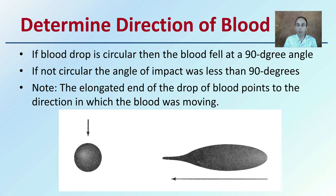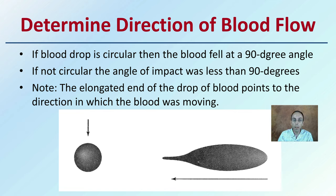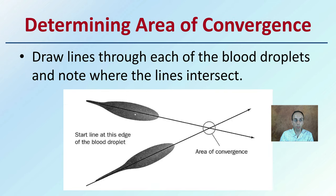To determine the direction of the blood: if a blood drop is circular, then the blood fell at a 90-degree angle. If it's not circular, the angle of impact was less than 90 degrees. Note that the elongated end of the drop points towards the direction in which the blood was moving. It's important to recognize these basic patterns to know the direction the blood was flowing.